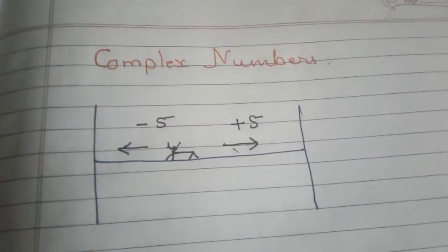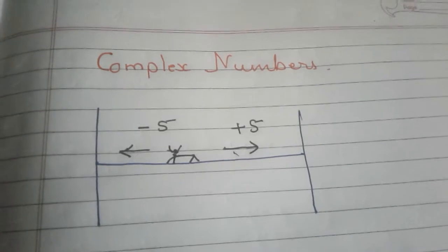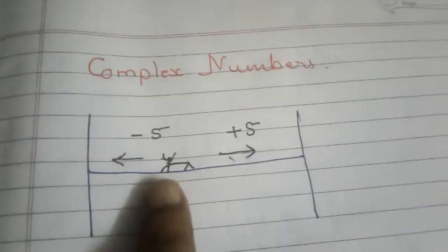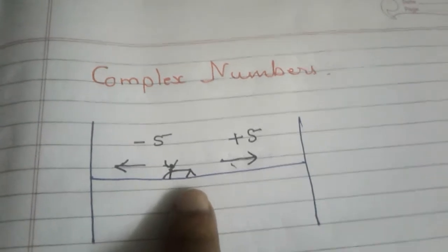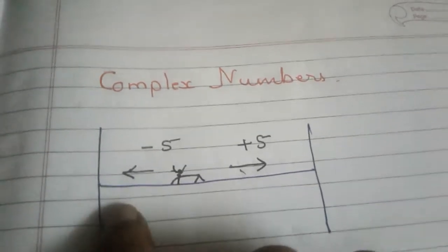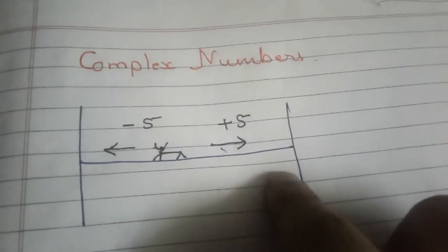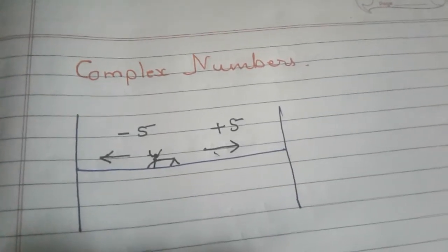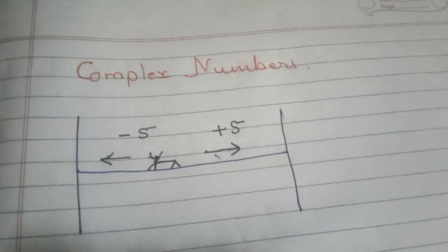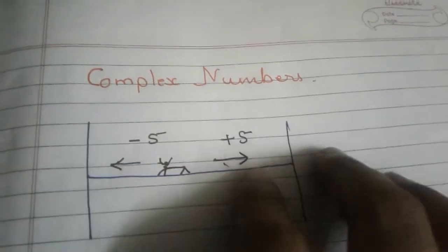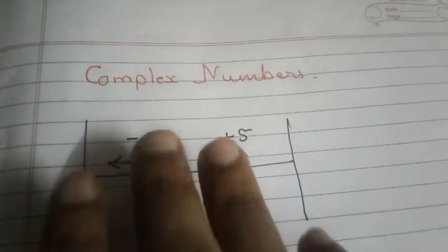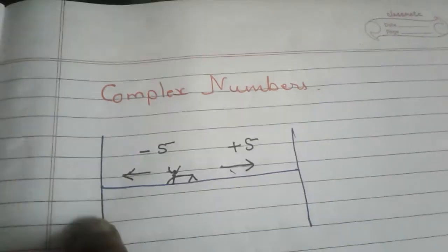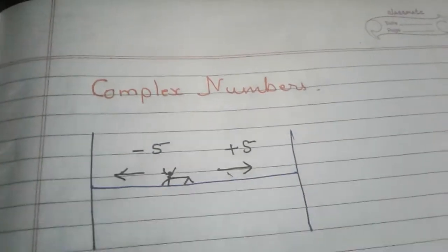Today we are going to deal with complex numbers. Imagine an ant which has the freedom to go forward or backward on a rope tied to both ends. There are two possible velocities for this ant — one is positive x or negative x. In this case, let's take 5.